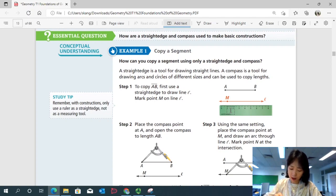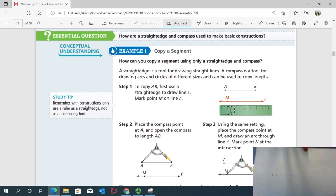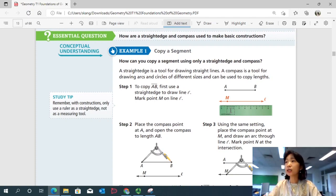So point M is going to copy point A. And then we're going to draw the intersection using the arc. Okay, so draw an arc that goes through the line that you drew earlier, right? Then you have an intersection between the arc and the line. Then you're going to mark this intersection point N. And now this is a duplicate of the segment AB. These are the basic steps of copying a segment.